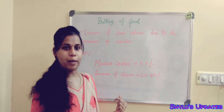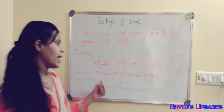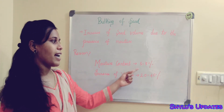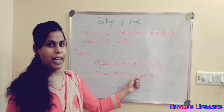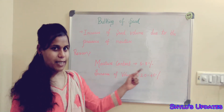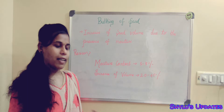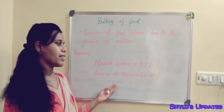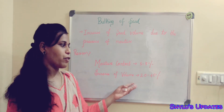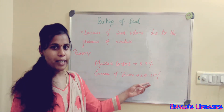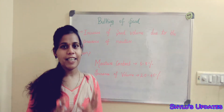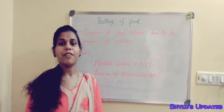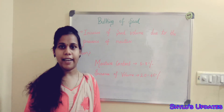Another important point: if the moisture content in the soil is 5 to 8%, then the increase in volume of sand would be 20 to 40%.